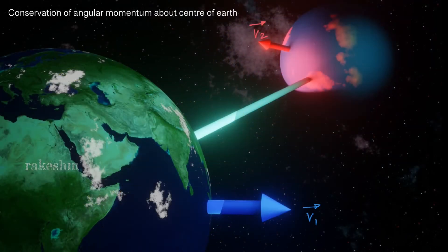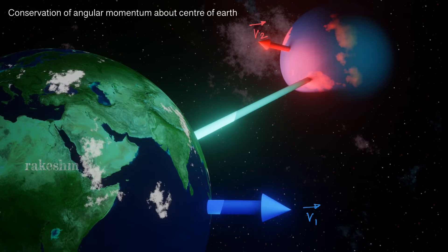So we have written two equations: conservation of energy and center of mass velocity remains the same. Now we need to bring a relation in the given variables so that these two planets undergo a collision. Let us write one more condition — conservation of angular momentum about the center of earth. Now the center of the earth is a non-inertial frame, so we need to draw a pseudoforce on this planet.